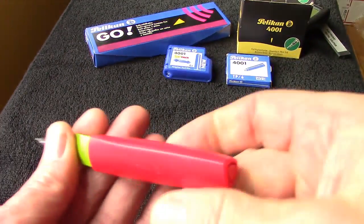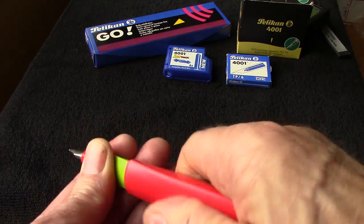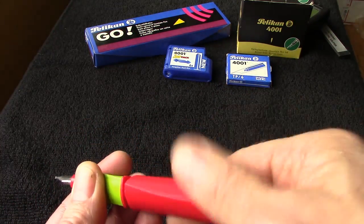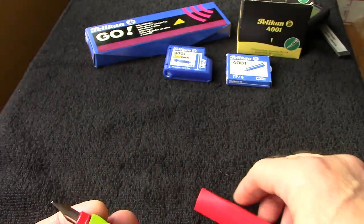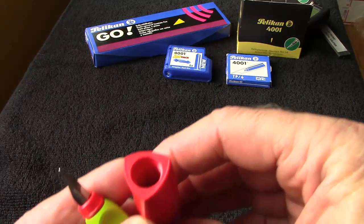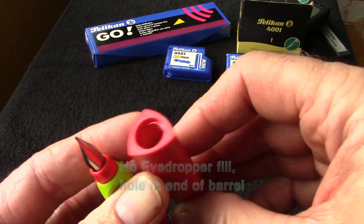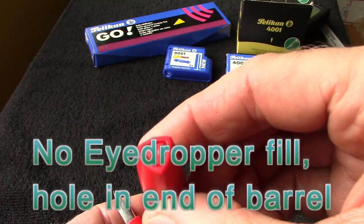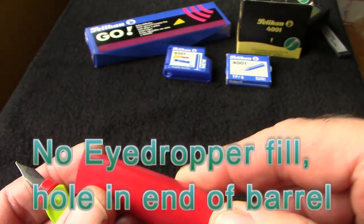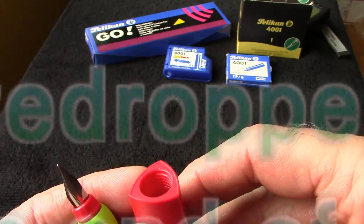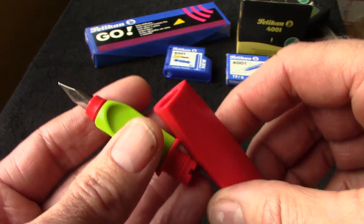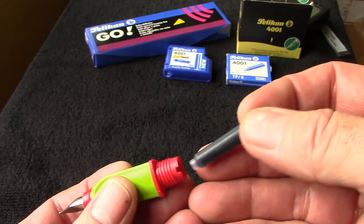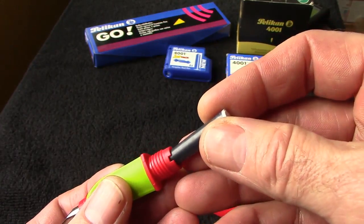It's a cartridge pen. It comes with two cartridges and it just unscrews. And as you can see, it's all plastic. I do think this could be turned into an eyedropper pen. There's certainly no metal inside and probably no place for the ink to leak. But in this review, we're going to use the cartridge because I haven't used a cartridge for many years, so I figured I would give it a shot.